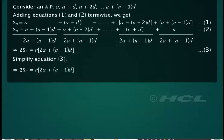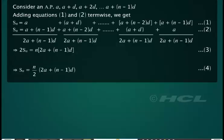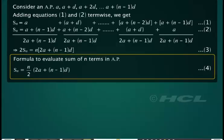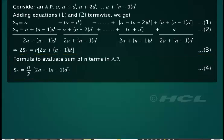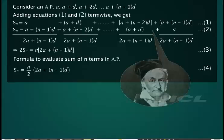On simplifying equation 3, we get the sum of n terms in the AP given by equation 4. Equation 4 is the formula obtained to evaluate the sum to n terms of an AP. This method of reversing and adding the terms of an AP was given by Gauss.